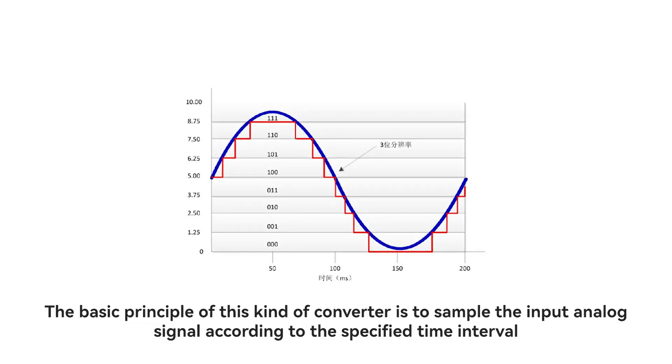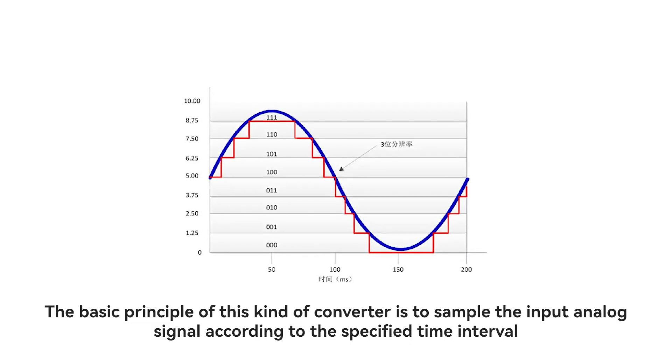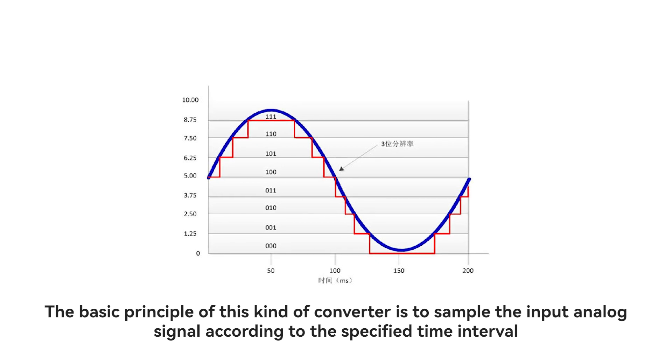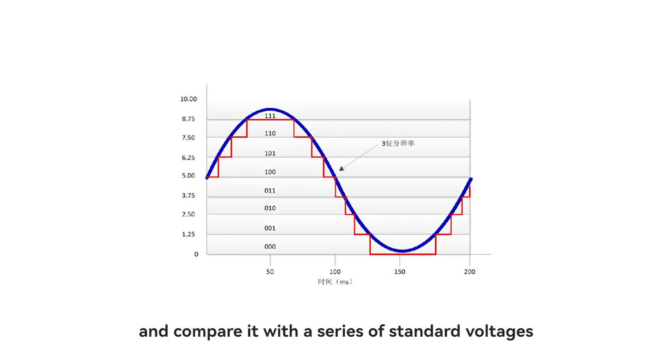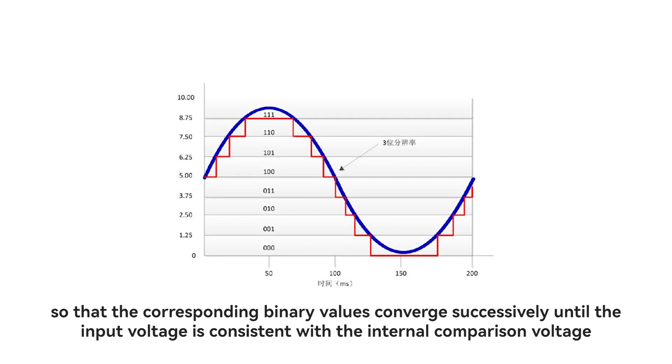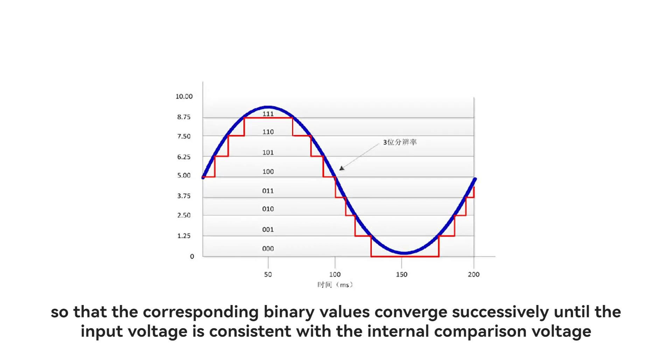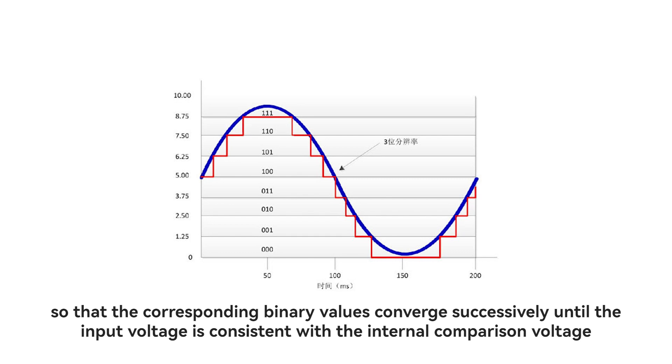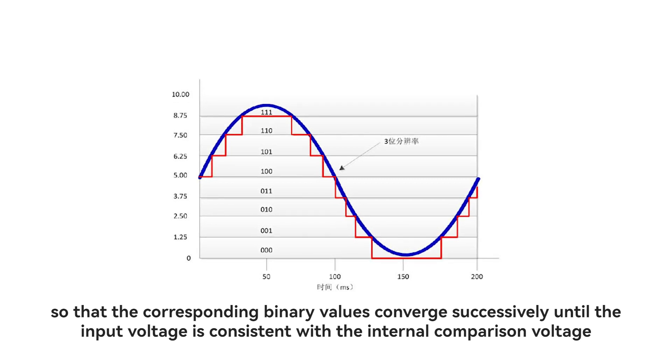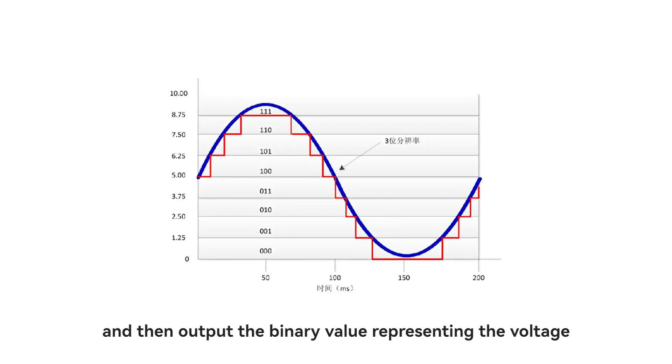The basic principle of this kind of converter is to sample the input analog signal according to the specified time interval and compare it with a series of standard voltages so that the corresponding binary values converge successively until the input voltage is consistent with the internal comparison voltage and then output the binary value representing the voltage.